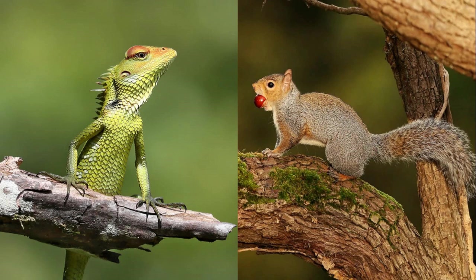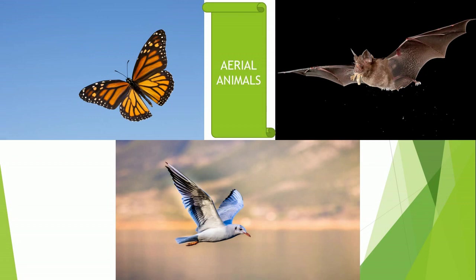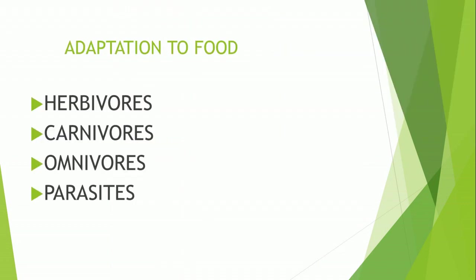Next are aerial animals. The animals which spend most of their time in air — such as birds, bats, moths, and butterflies — are called aerial animals. These have wings and can fly. Birds have hollow bones which make their body light, and their streamlined body shape helps them to cut through air easily.